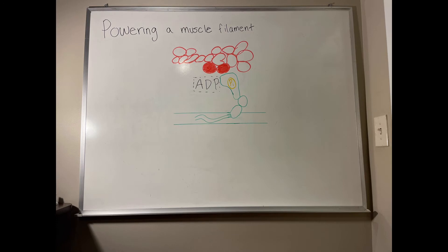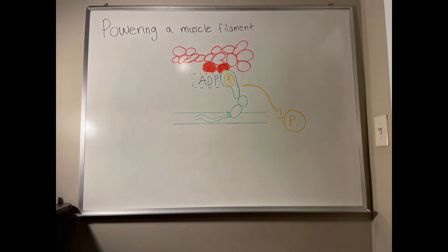The myosin fiber head now attaches to F-actin group on the right. Phosphate is released from the myosin fiber head, followed by the release of ADP.